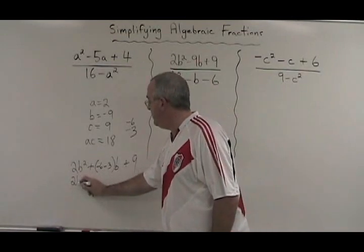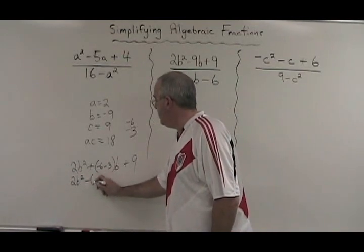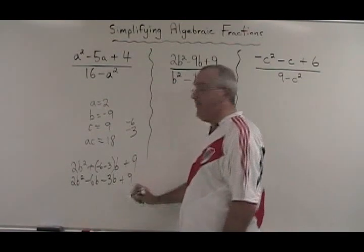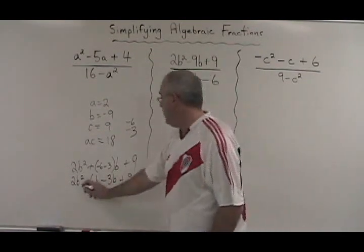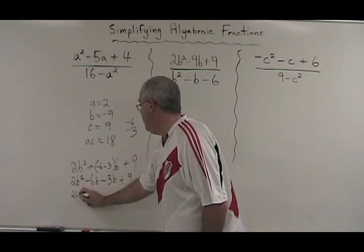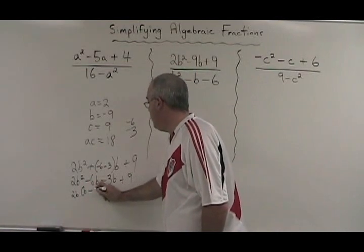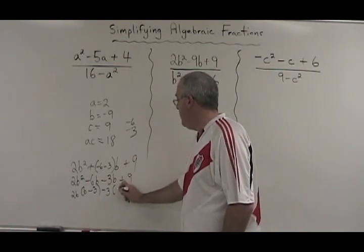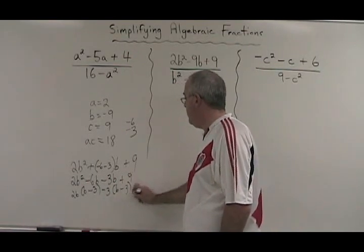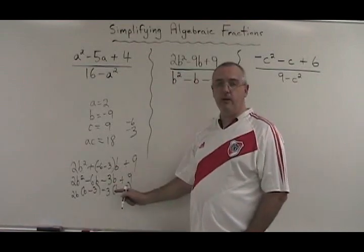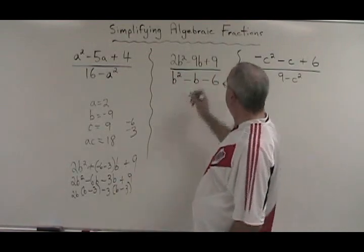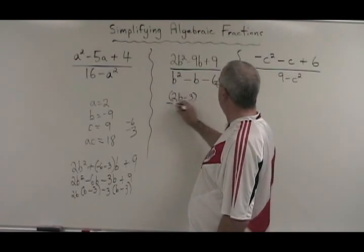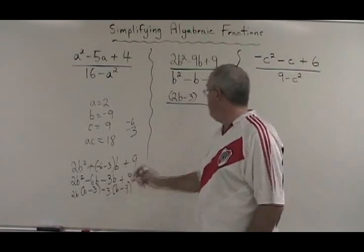Rewriting, 2B squared minus 6B minus 3B plus 9. During the grouping, common factor 2B, B minus 3, common factor negative 3, B minus 3. The result of our factoring of the complex trinomial is 2B minus 3 in the numerator times B minus 3.